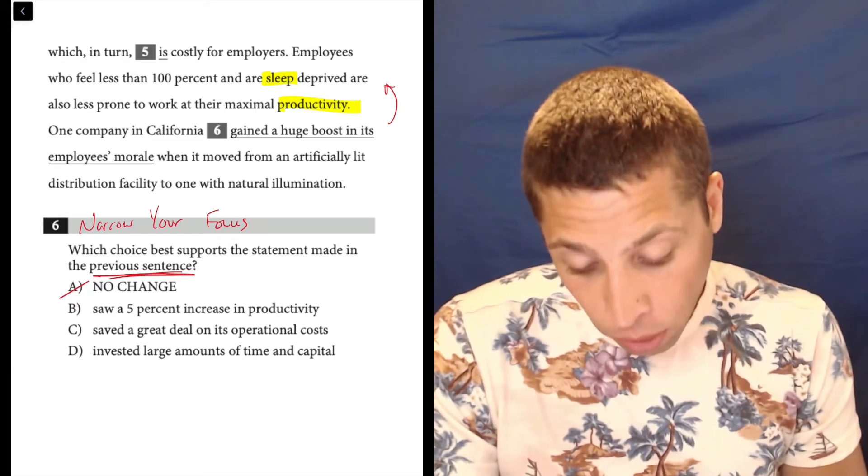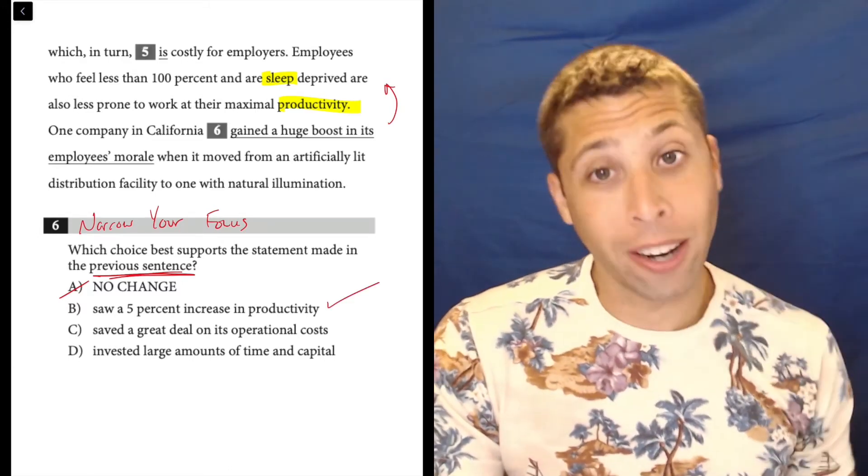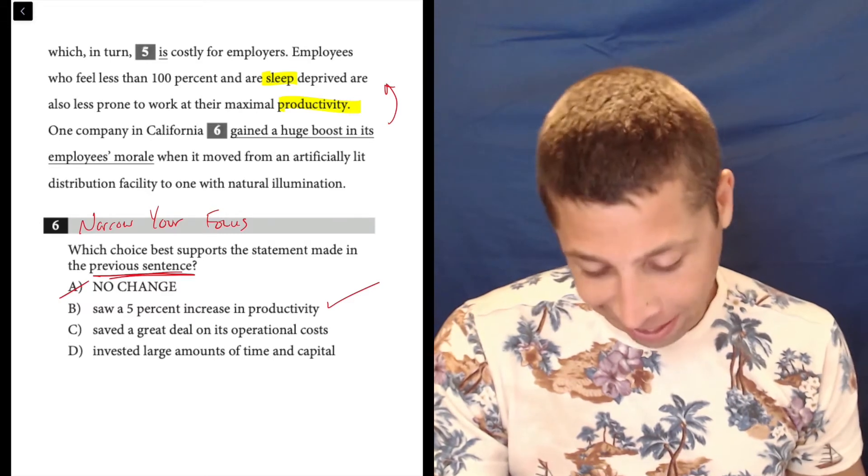B, the one company in California saw a 5% increase in productivity. That seems pretty good. Let's keep going.